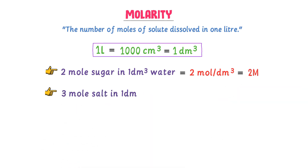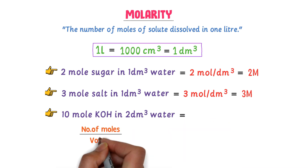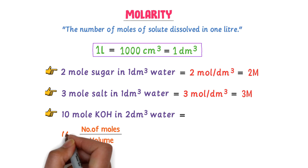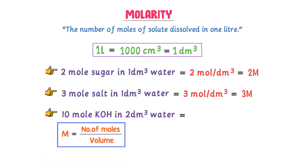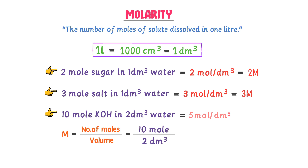Consider 3 moles of salt in 1 dm³ of water — the concentration is 3 mol per dm³, or 3 M. Thirdly, consider 10 moles of potassium hydroxide in 2 dm³ of water. Can you guess the concentration? We divide the number of moles by the volume of solution, so the formula of molarity is moles divided by volume. 10 moles divided by 2 dm³ equals 5 mol per dm³, or 5 M. By this way we can easily calculate the concentration of a solution.